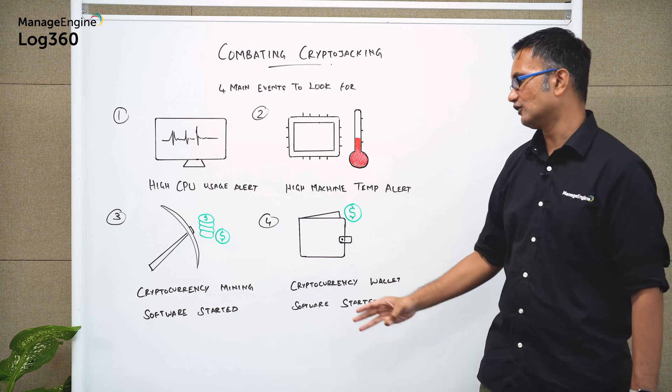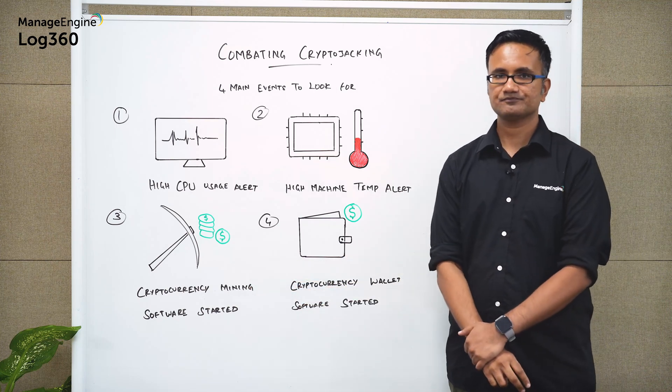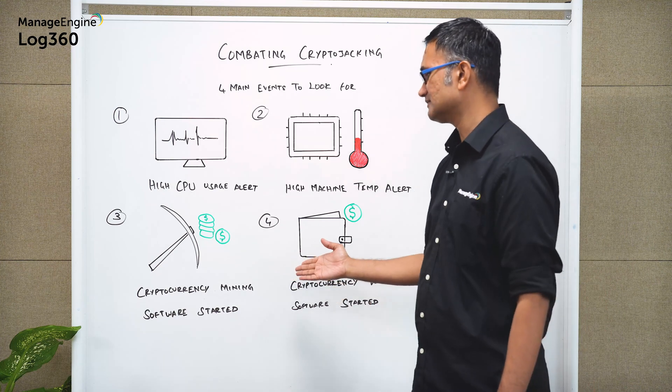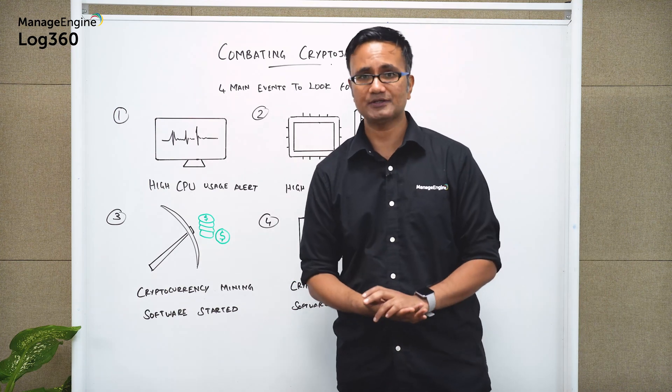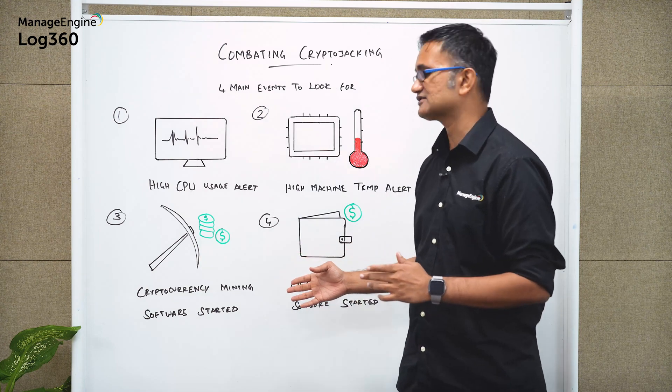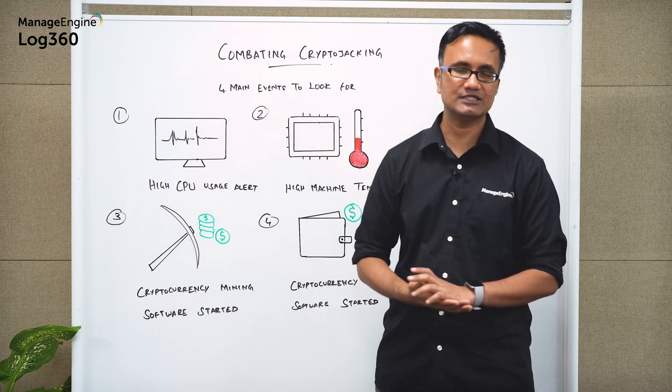The third event to look for is cryptocurrency mining software which gets started. Now under normal circumstances there is no reason why a cryptocurrency mining software gets started within your network. You wouldn't want that. In case a cryptocurrency mining software does get started it's cause for concern and that's an event that you need to look for.